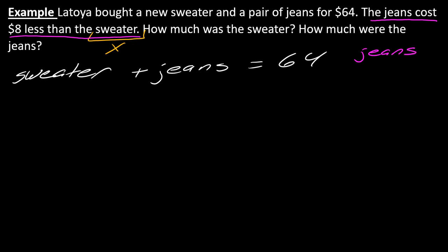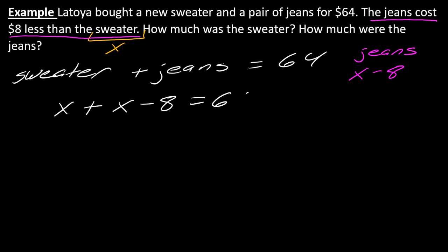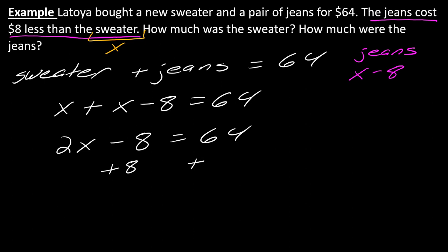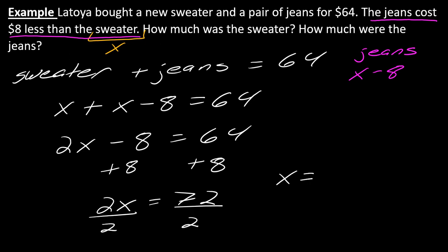The jeans have to be put in terms of the sweater. For the jeans, I take the cost of the sweater but I need to take $8 away from that, so that's X minus 8. Now I've got how to represent both the sweater and the jeans. The sweater is X and the jeans are X minus 8, and that's going to come out to 64. Taking like terms and adding 8 to each side gives me 2X equals 72. Divide both sides by 2 and I get X equals 36.